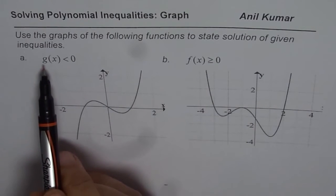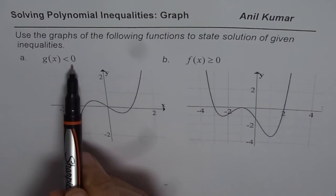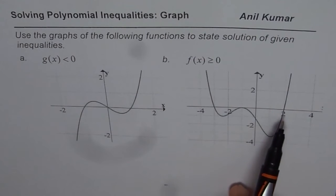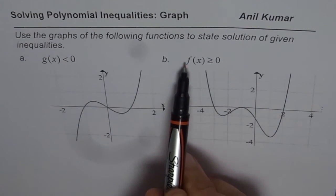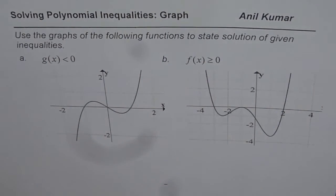So first one we need to find g of x is less than 0 and from the second graph we need to figure out f of x is greater than equal to 0. Now let's begin with the very first one.